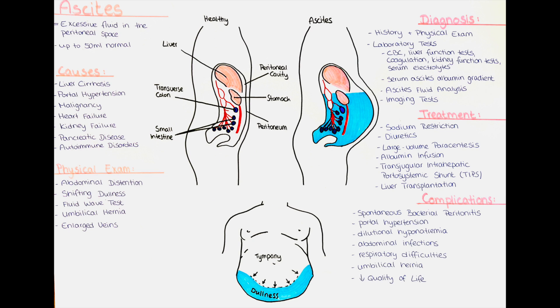In advanced liver disease and severe portal hypertension, ascites can be associated with the development of hepatorenal syndrome. Hepatorenal syndrome is characterized by kidney dysfunction, reduced urine output, and impaired kidney function. It is a life-threatening complication that requires immediate medical attention.